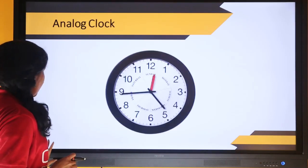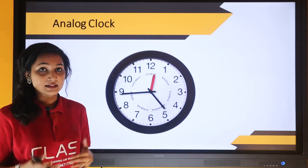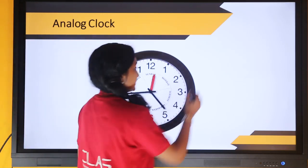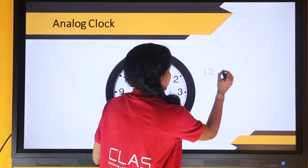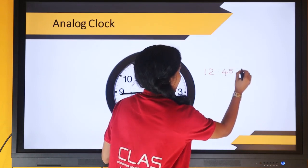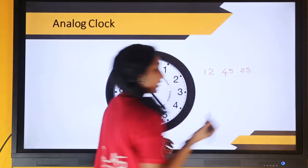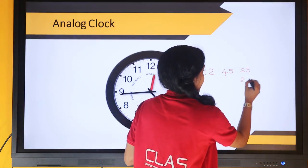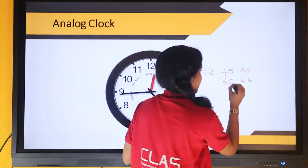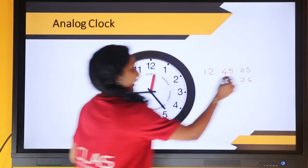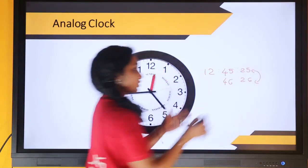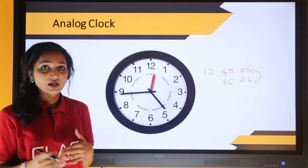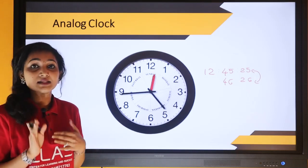Here is an example of an analog system — the clock which we use at home. In this clock, we represent time as 12 hours, 45 minutes and 25 seconds. After covering 60 seconds, it switches to 26 seconds, then changes to 46 minutes and so on. We are able to see what is happening between 25 and 26. We can take any values within the given 24 hours — that is what an analog system is, meaning it is continuous.